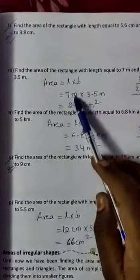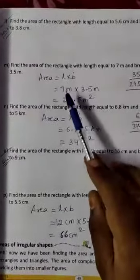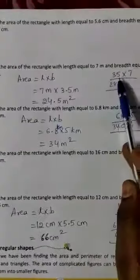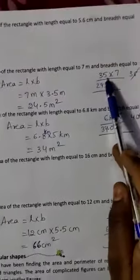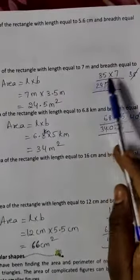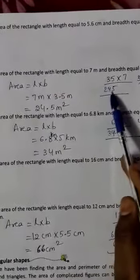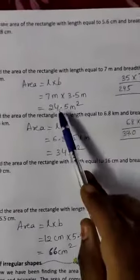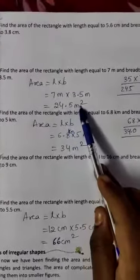So, 7 meters × 3.5 meters. Remove the point: 35 × 7. 7 × 5 is 35, 7 × 3 is 21, plus 3 is 24. We get 245. Since there was one decimal place, the answer is 24.5 meter square.